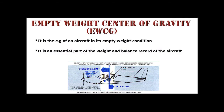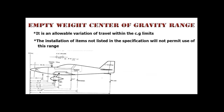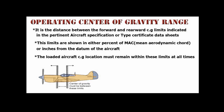Empty Weight Center of Gravity is the CG of an aircraft in its empty weight condition, and it is an essential part of the weight and balance record of the aircraft. Empty Weight CG Range is the allowable variation of travel within the CG limits; installation of items not listed in the specification will not permit use of this range. Operating Center of Gravity Range is the distance between the forward and rearward CG limits indicated in the pertinent aircraft specification or type certificate data sheets.